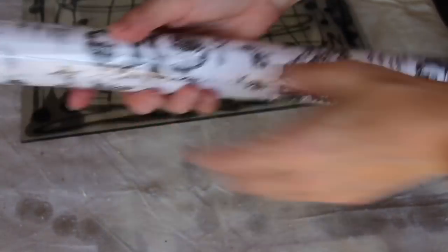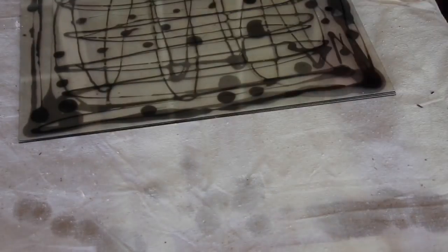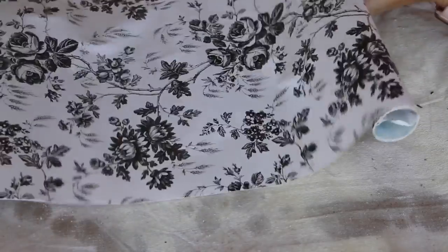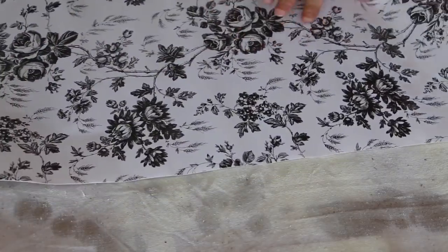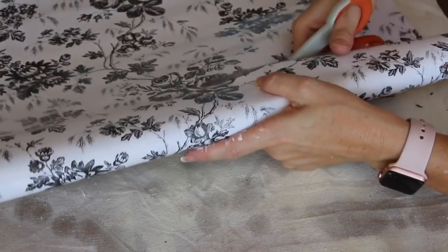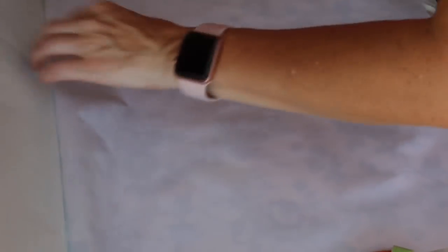I'm taking this contact paper that I also got at the Dollar Tree. Now you have several different options, but I really liked this black and white floral. It was going to work perfectly for what my thought is with what I want. I'm going to line it up and I'm actually going to make sure that I have extra hanging off of my edges and then I'm going to cut that off.